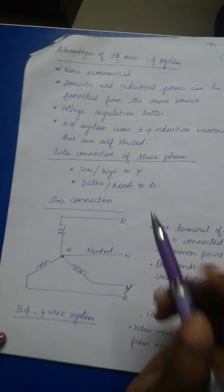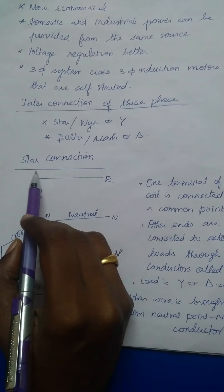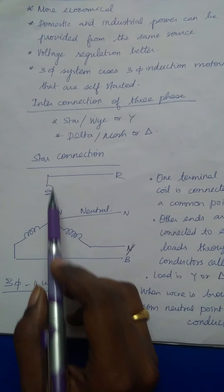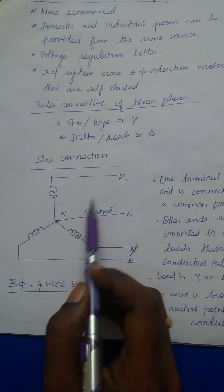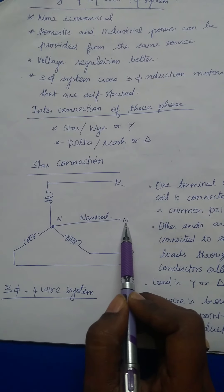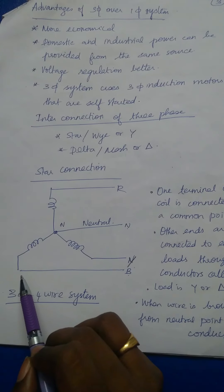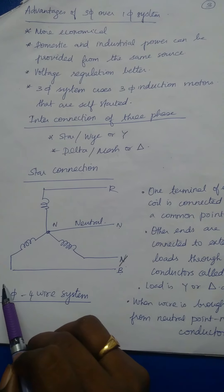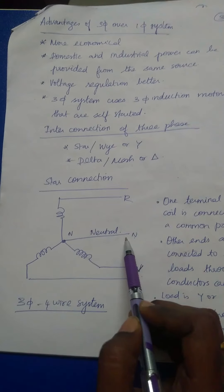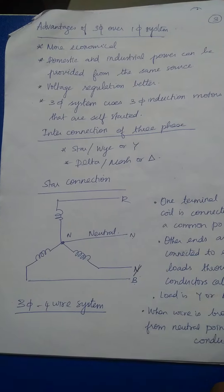Next we will see the star and delta connection, starting with the star connection. You can see a star network with R, Y, and B. The center terminal is the neutral terminal. The connection seen previously was a 3-phase, 3-wire system, and here with 4 lines it is a 3-phase, 4-wire system.